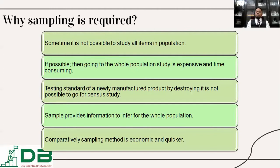Testing newly manufactured products by destroying them makes census study impossible. For example, if you are producing electric bulbs and have produced 100 million bulbs, and you would like to know the strength of each bulb by destroying them — if you destroy each and every element, then your entire sample will be destroyed and your resources will be demolished.